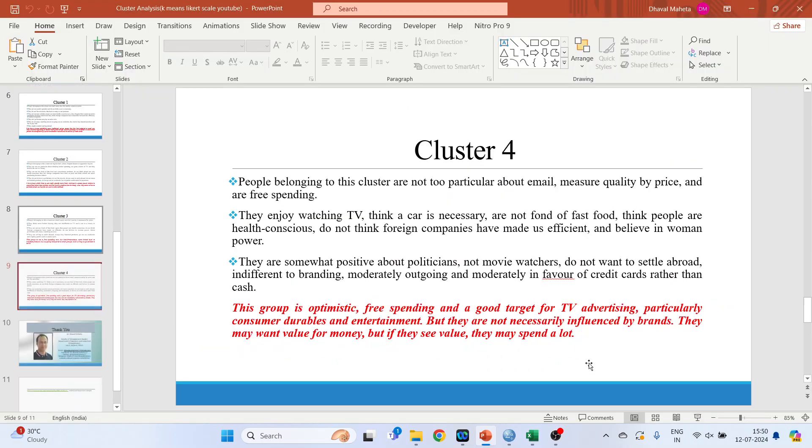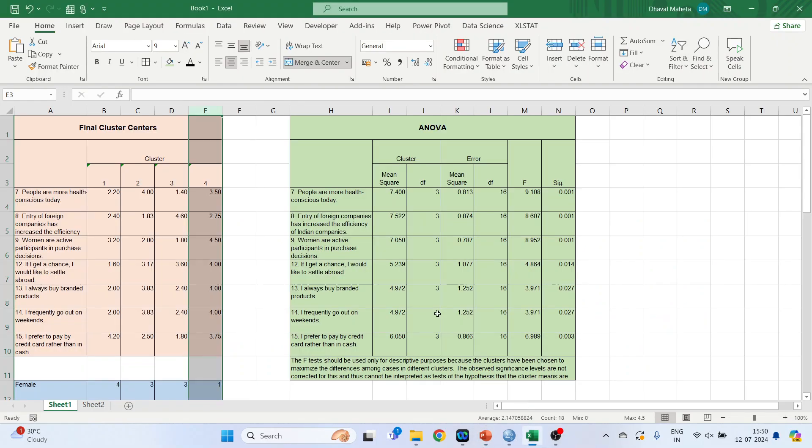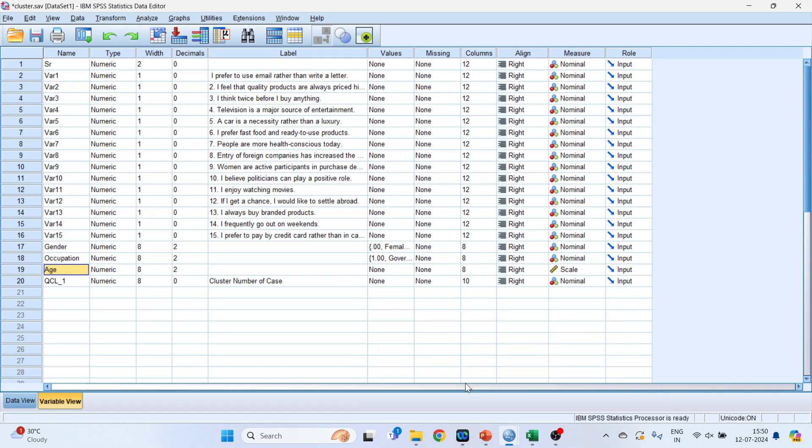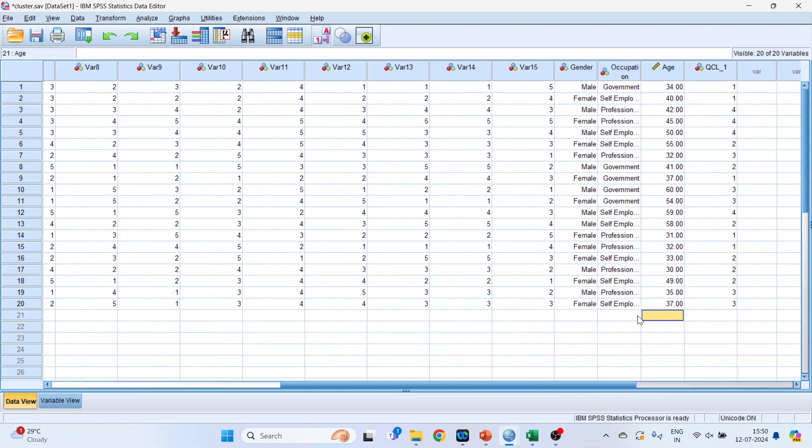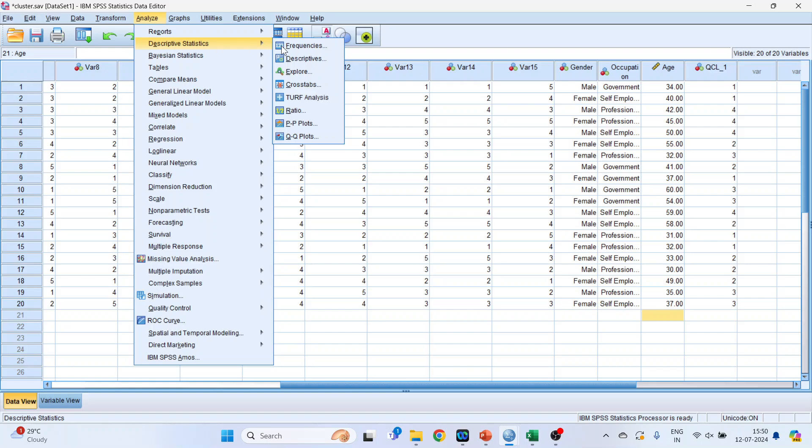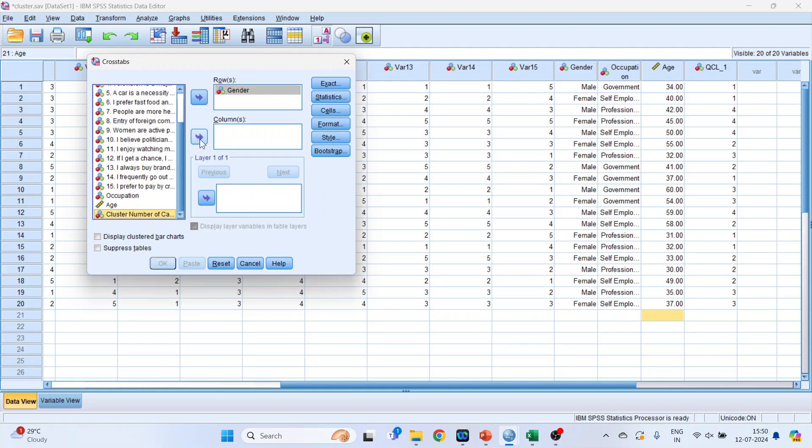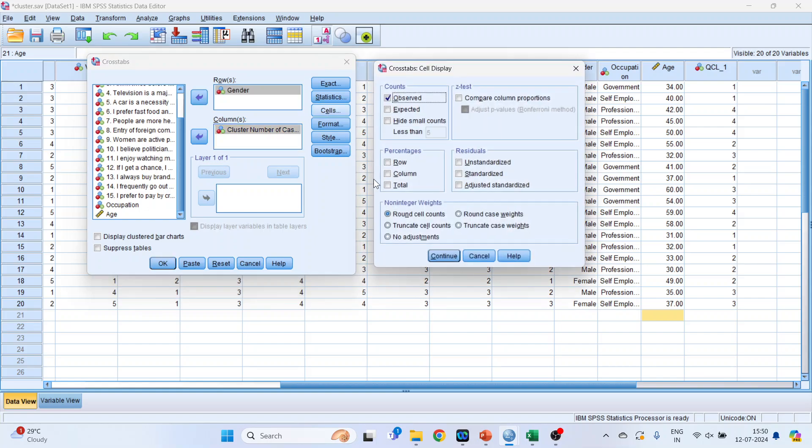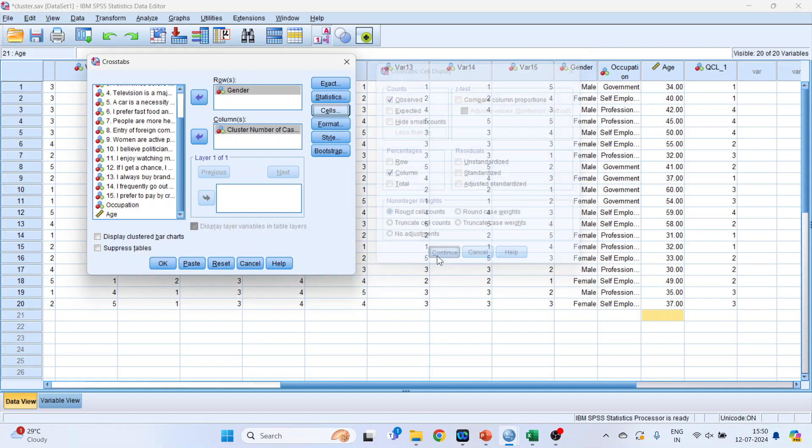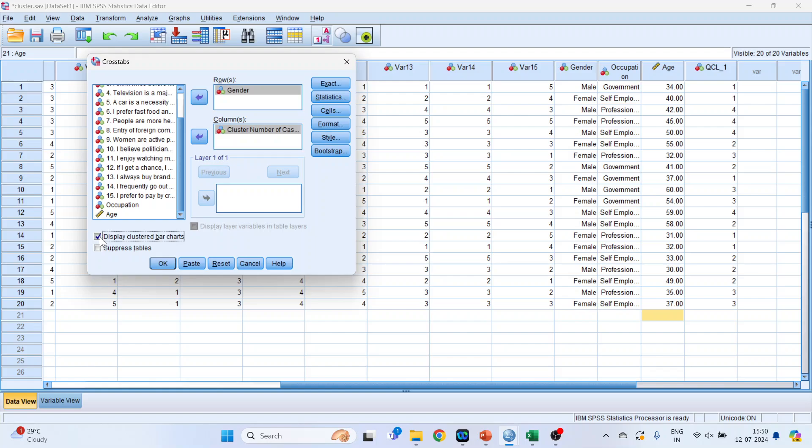Now we want to find out the demographic classification of this cluster. In cluster one, the demographics, two, three, and four. So we are having we have captured gender and occupation. Now go in the data view. In the last you can see four clusters. Cluster number one, two, three, four. Now we will go in analyze, descriptive statistics, and cross tabs. Transfer gender into the rows and cluster into the columns. Go in cells. Only activate the column percentage. Continue. Display clustered bar charts. Click OK.